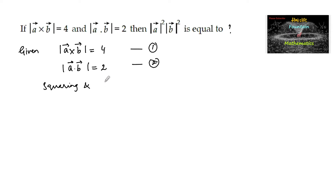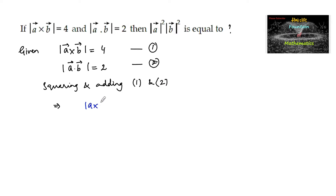Squaring and adding 1 and 2, we get: mod of a cross b squared plus mod of a dot b squared is equal to 4 squared plus 2 squared.